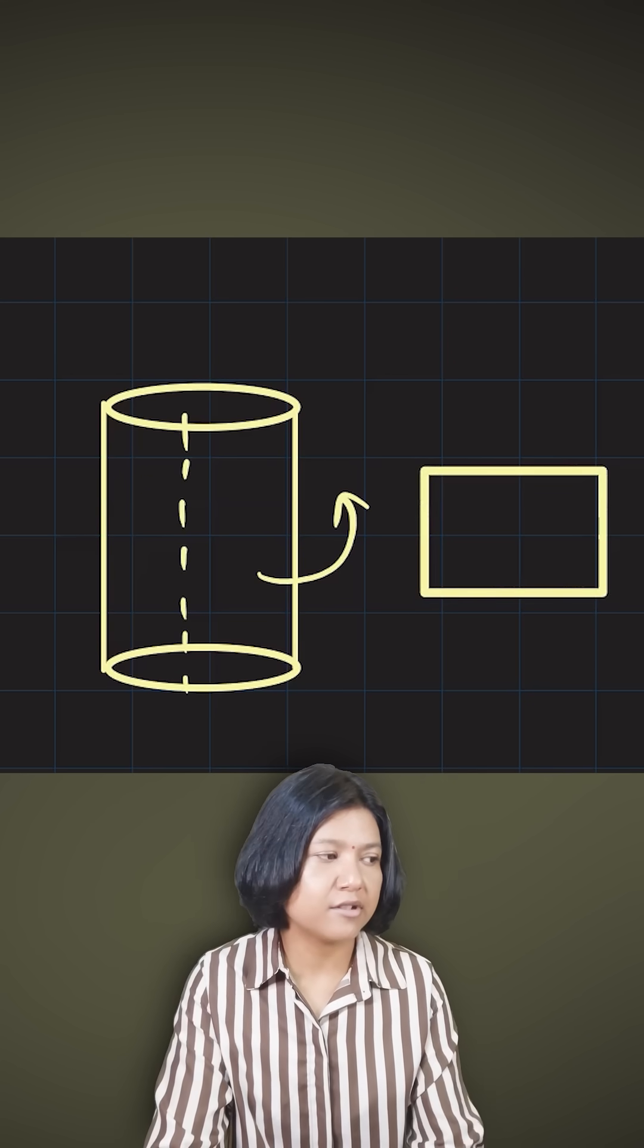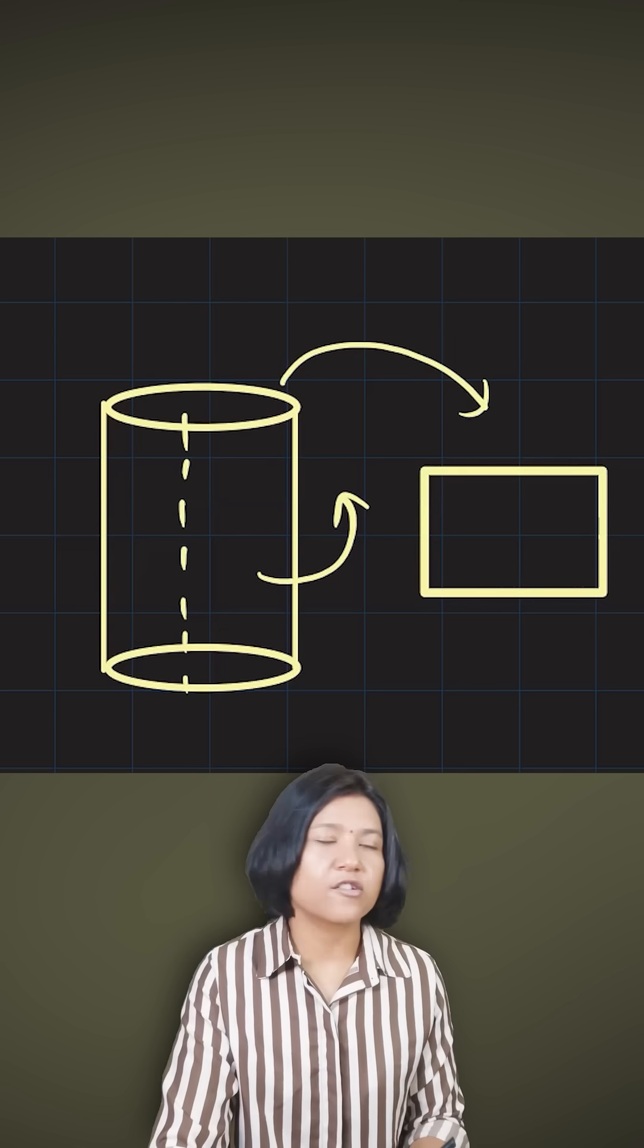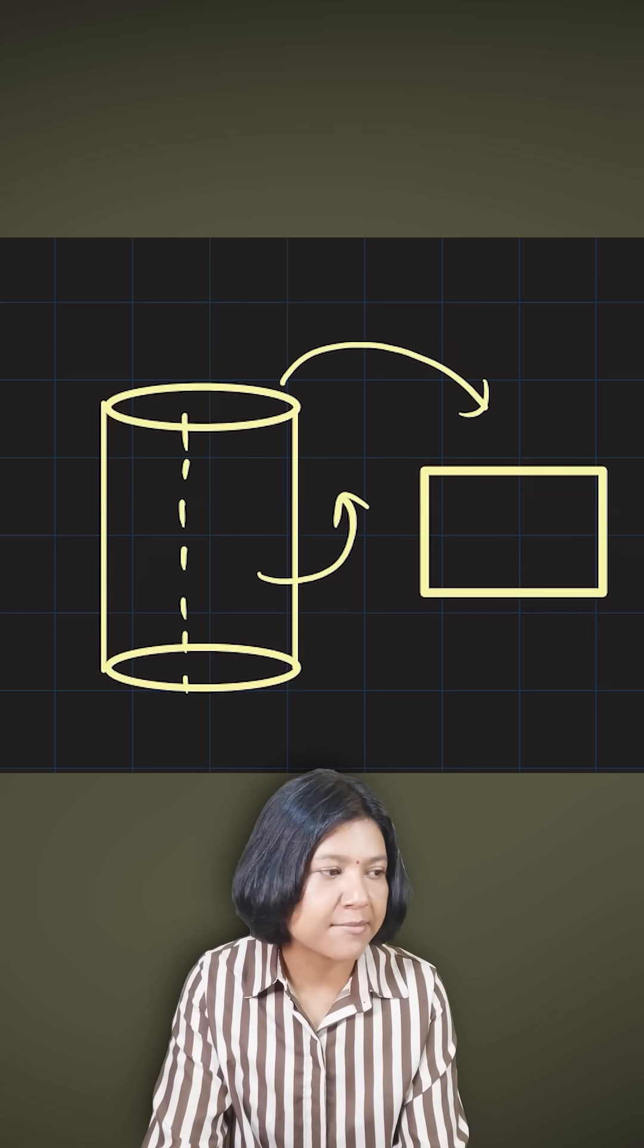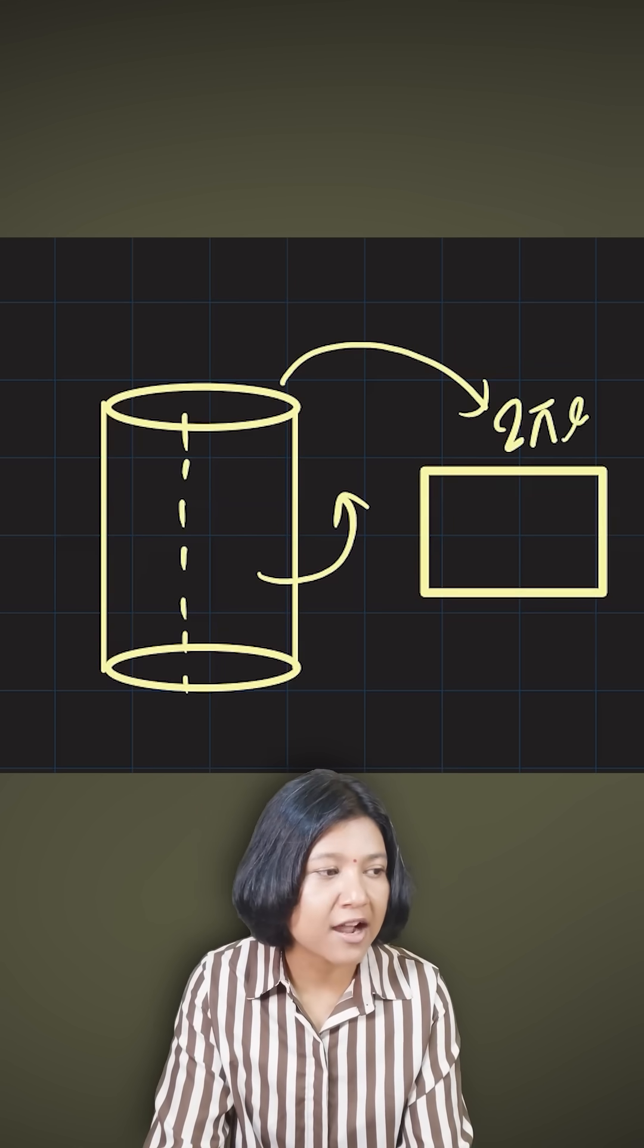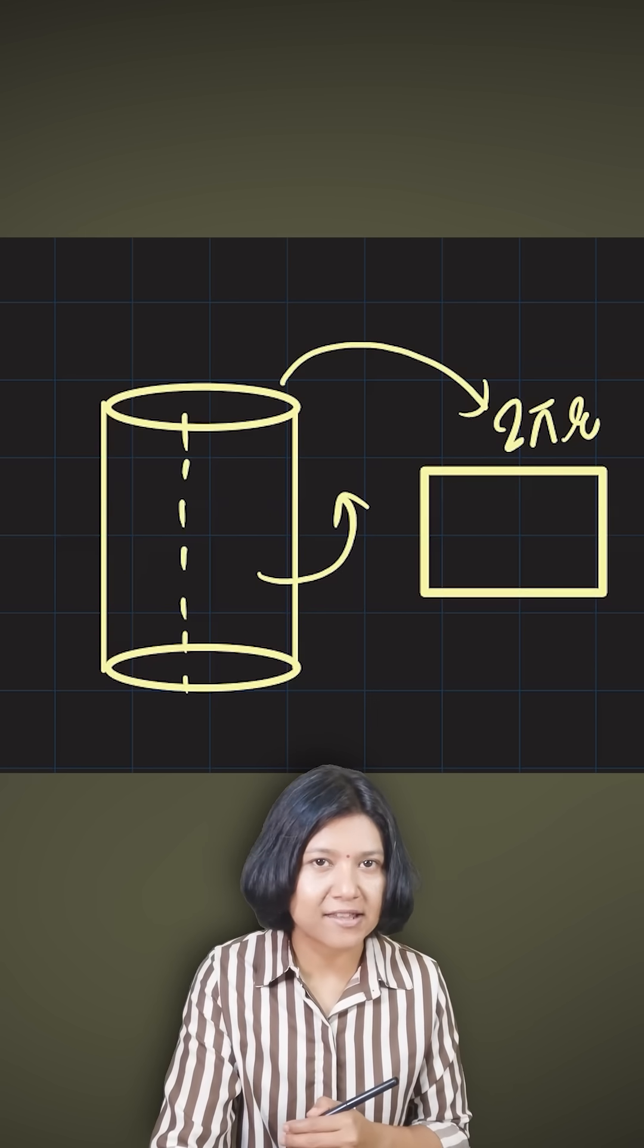Now this rectangle resembles the cylinder in a way that the circumference of the circle now opens up to be the length of the rectangle. Thereby I'm saying the length has to be 2πr because according to the circular base, there is just the radius I know.